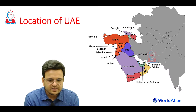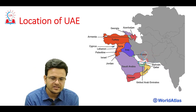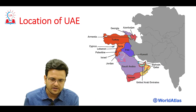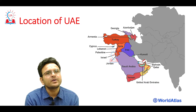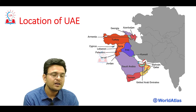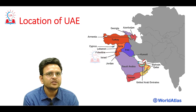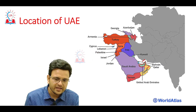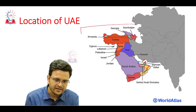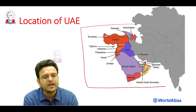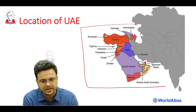When we see the location of UAE, we can see it borders Oman, Yemen, and the Persian Gulf. Apart from energy security, UAE is also important for other areas. This entire West Asia region is very important for India.